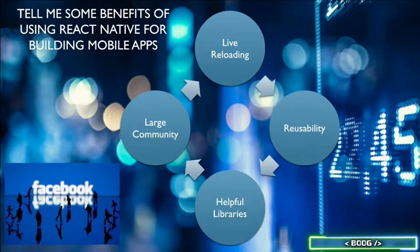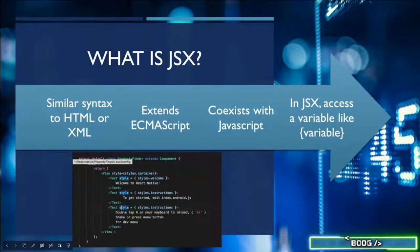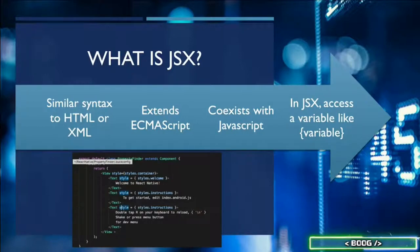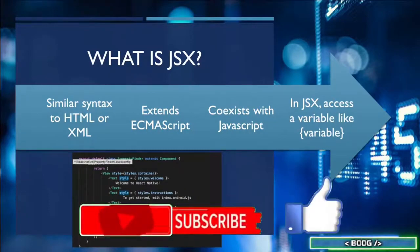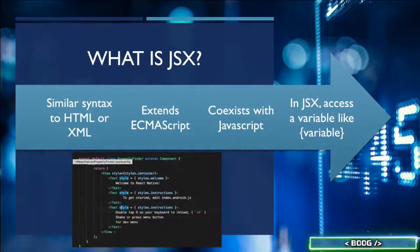What is JSX? JSX has similar syntax to HTML or XML. It extends ECMAScript so that JSX can coexist with JavaScript code. The syntax is used by preprocessors like Babel to transform the JSX. JSX is used in the return part of the source code. If you need to access a variable using regular JavaScript, you can wrap your code in curly braces. The curly brace syntax denotes that JavaScript is being used and not JSX.